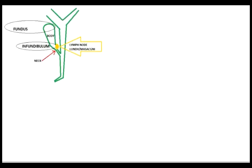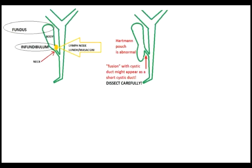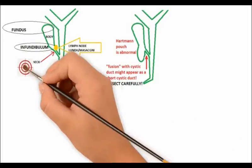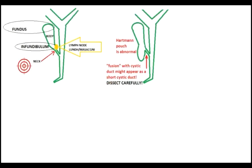Observe the various parts of the gallbladder. The Hartmann's pouch is an abnormal outpouching caused due to an impacted stone in the infundibulum. The target during laparoscopic cholecystectomy is the neck of the gallbladder, where one starts skeletonizing the cystic duct. The lymph node of Lund or Mascagni is found around the neck of the gallbladder.